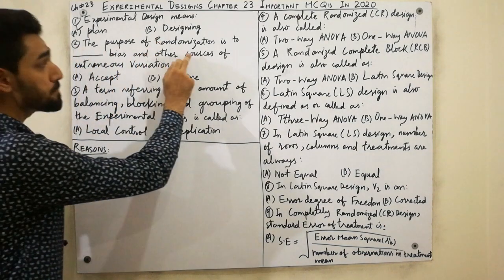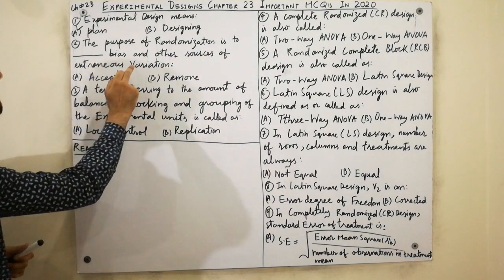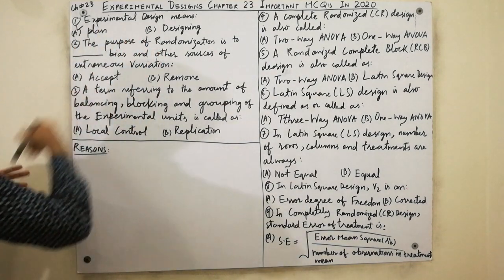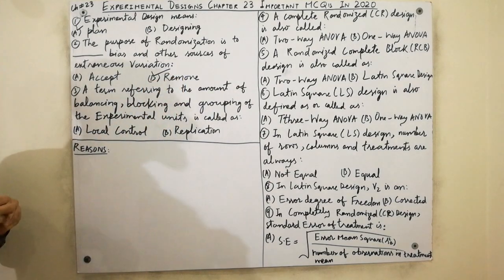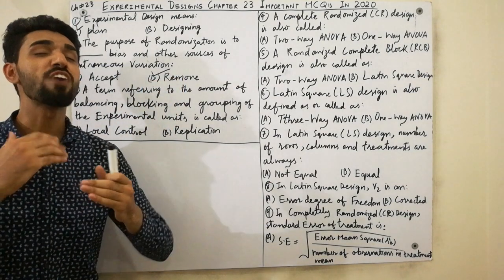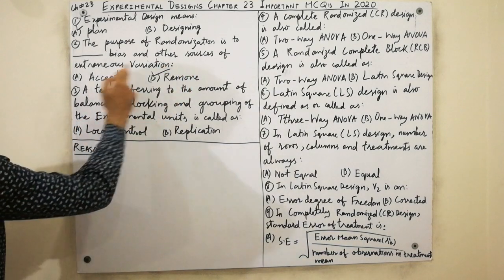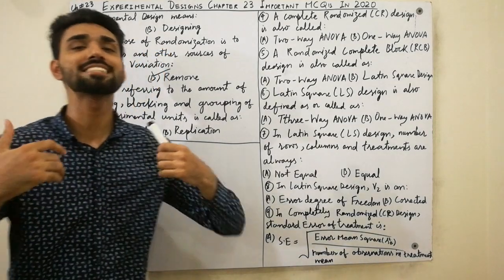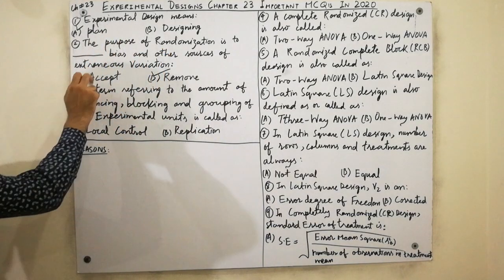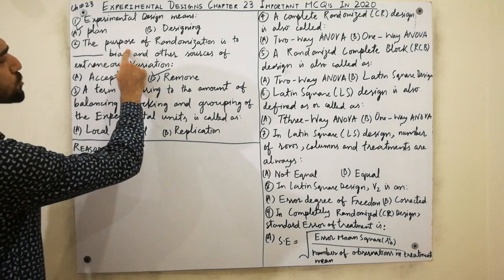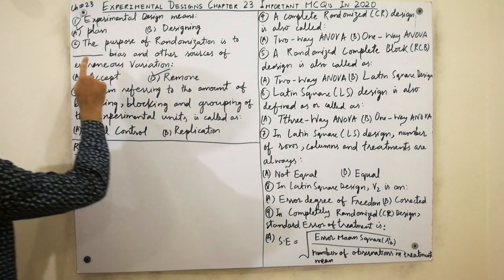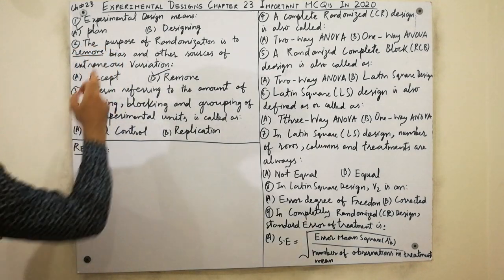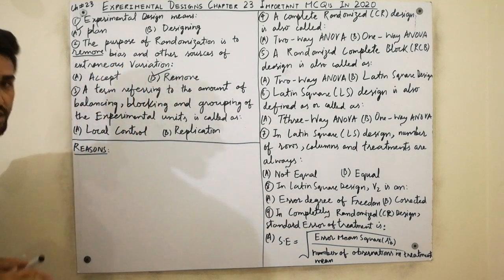Moving to the second MCQ — very simple. The purpose of randomization is to remove bias and other sources of extraneous variation. Must remember clearly: the purpose of randomization is to remove bias and other sources of extraneous variation.